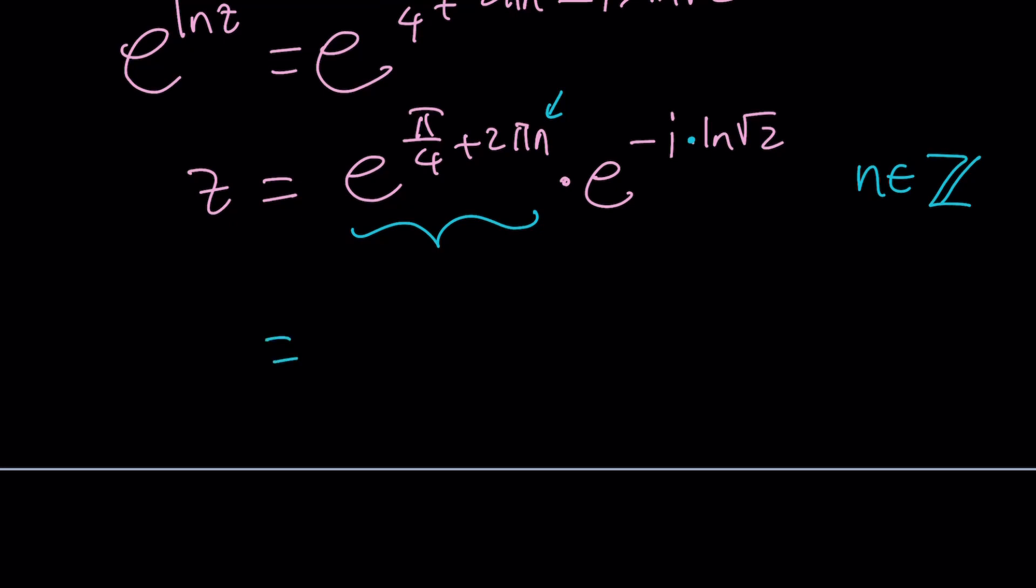And this is the second part and we can write this using Euler's formula. So this is going to be e to the power pi over 4 plus 2 pi n multiply by cosine of, now you've got to be careful here because notice that this is going to be the conjugate of e to the i ln root 2 because modulus is 1 obviously. So but cosine is even so we can kind of write this as cosine of ln root 2 minus i times sine of ln root 2.